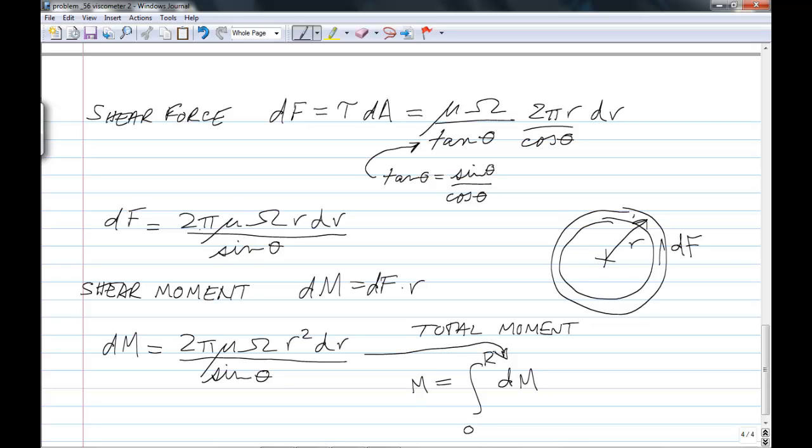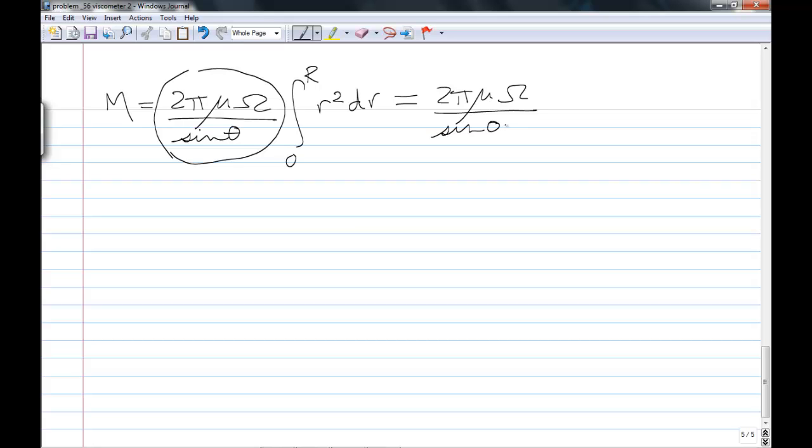We get M equals, and I'm going to bring some of the terms outside of the integral sign because they're constants, where all of these terms here are not functions of r, so they can come outside of the integral sign. And so this is a really simple integral. We get 2 pi mu omega sin theta r cubed upon 3, and that's got to be evaluated between 0 and R.